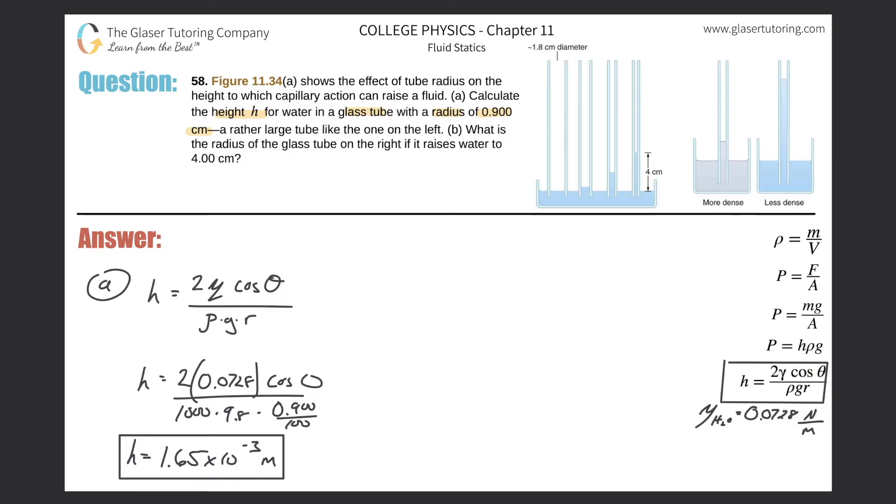Now let's take a look at 4 centimeters. Basically same formula again. So height is equal to 2 multiplied by the surface tension, multiplied by the cosine of the contact angle, all divided by then density times gravity times the radius. This is for water again. So cosine of zero is going to be one. And what we need to do is algebraically solve this now for the radius.